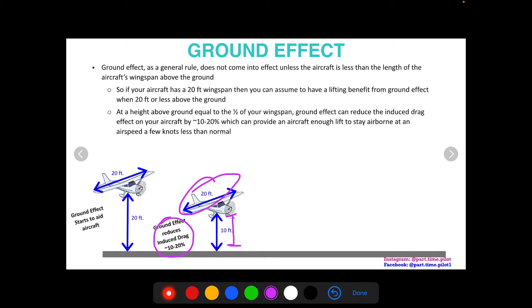Even a 10 to 20 percent reduction in induced drag can make an aircraft stay airborne or get airborne at an airspeed a couple knots less than normal. So even though it seems like a small effect, it can have a large difference on how you operate the aircraft.